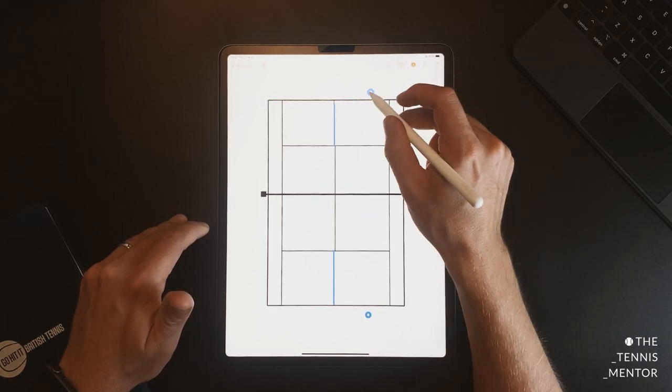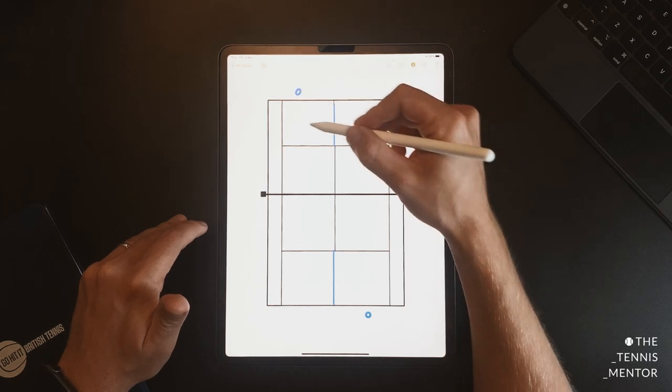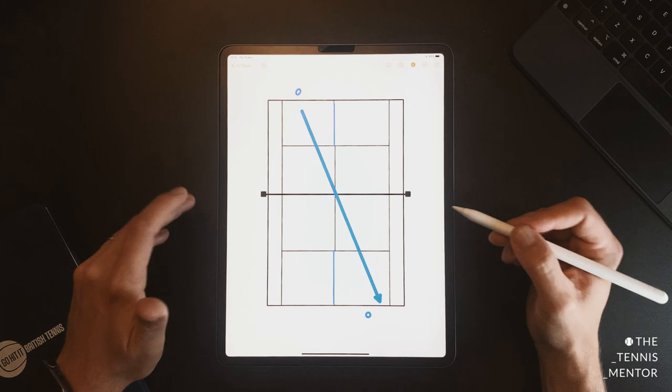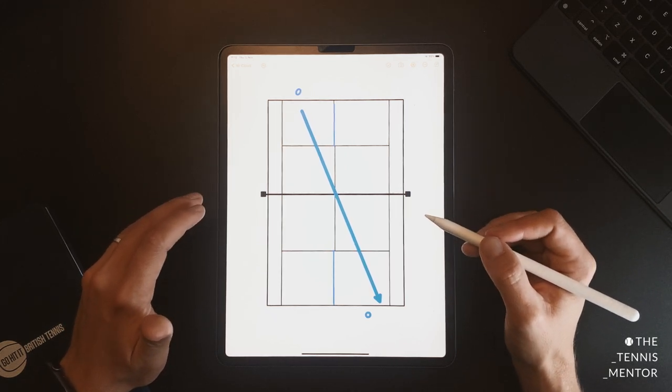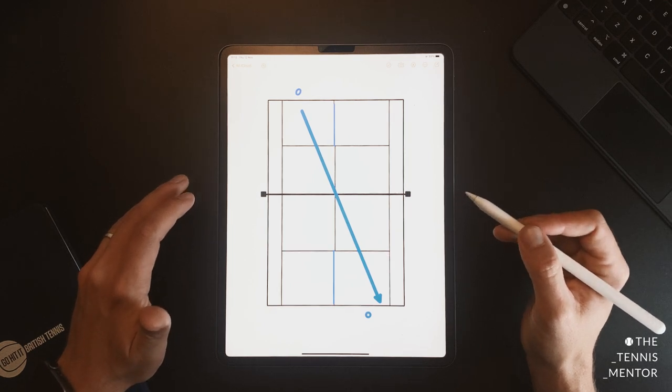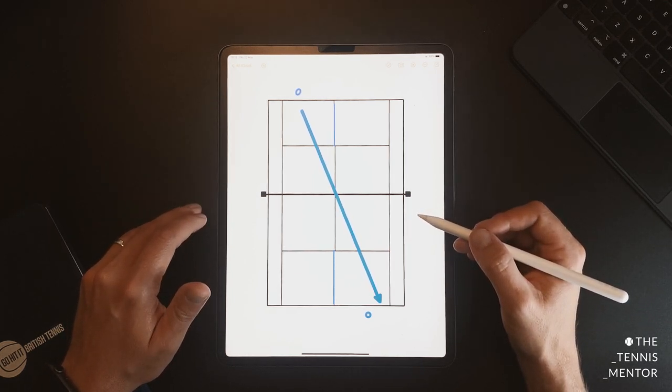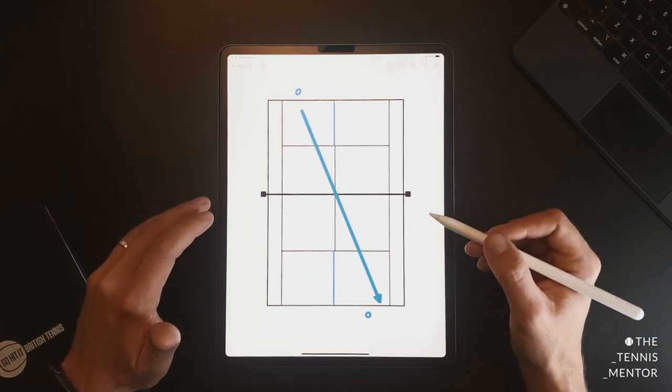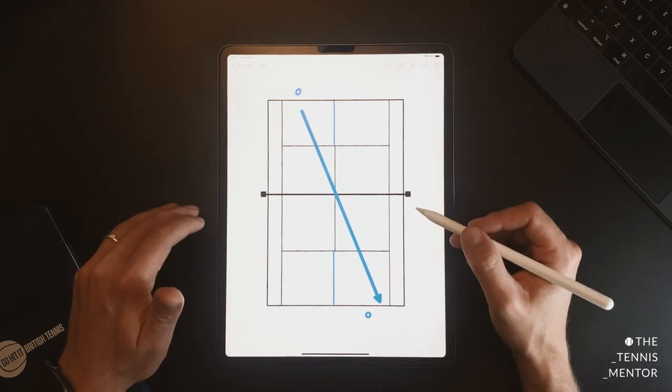Another way you can do this exercise is on the cross court. So exactly the same format, but you'll be playing on the diagonal instead. This brings in some other tactics. You can start to work on creating space by hitting shorter and wider angles, making use of the tram lines if you decide to use them as well. But it's really good doing this on a cross court because generally when you play singles and doubles, this is going to be your safest shot to play.